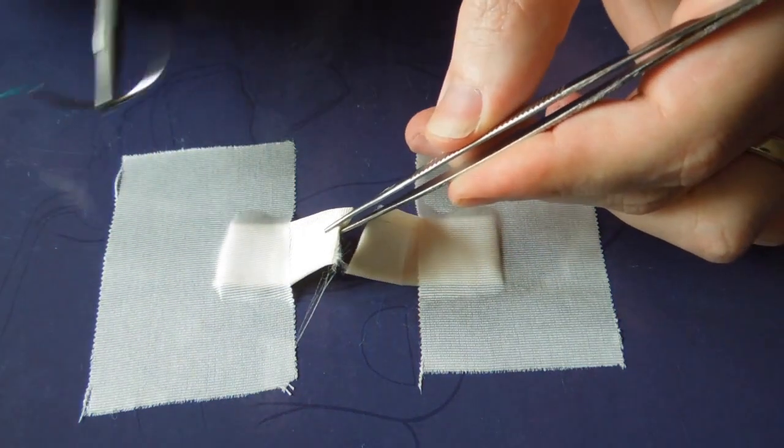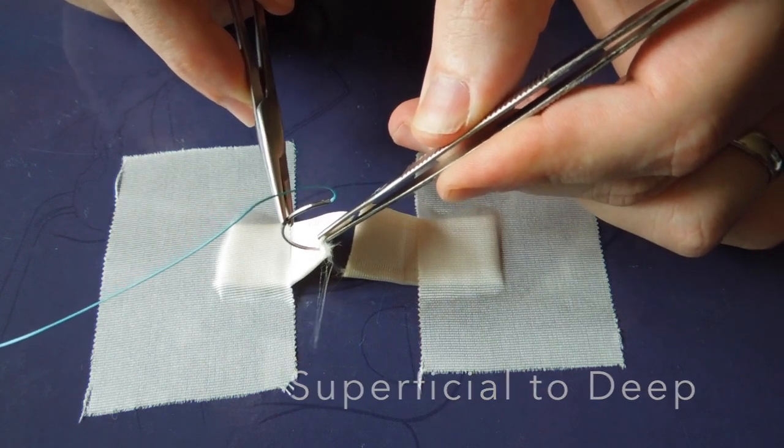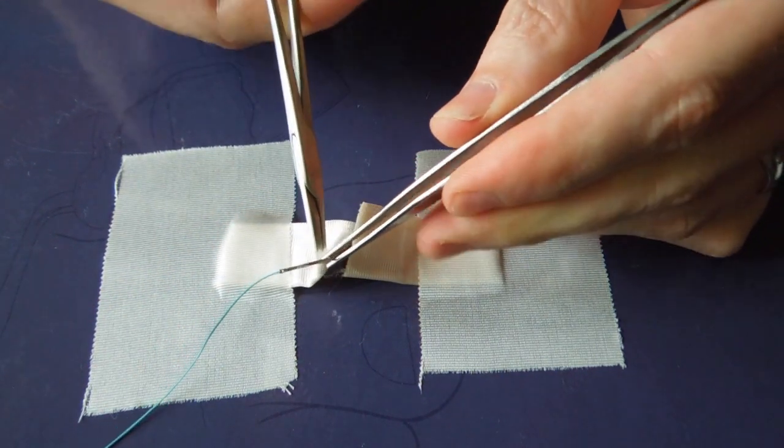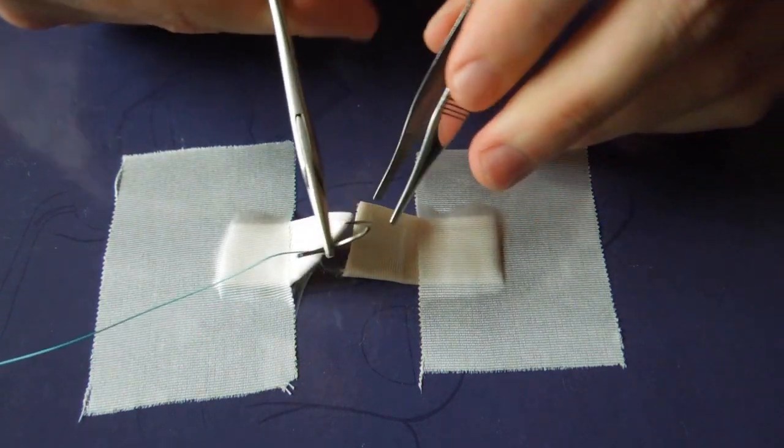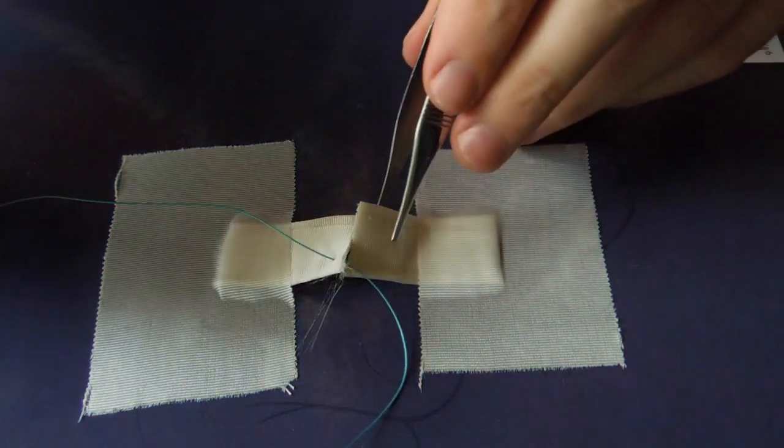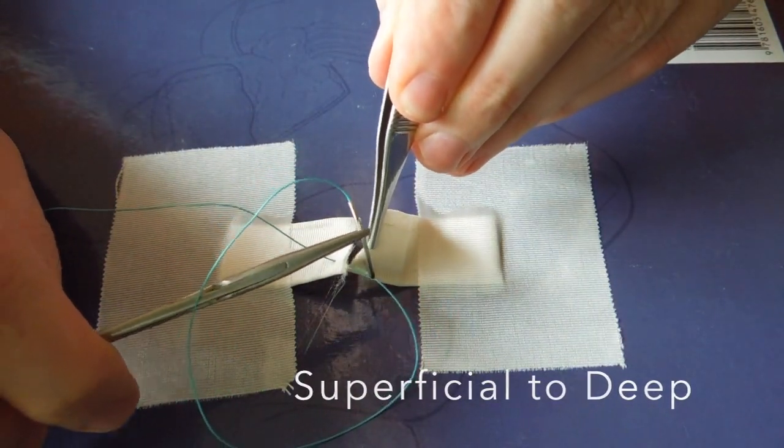So what we do first is we section our ligament, and then we're going to throw four throws here. The first one is superficial to deep on side A. Then moving to side B, we're going to throw the same direction, superficial to deep, and that's on side B.